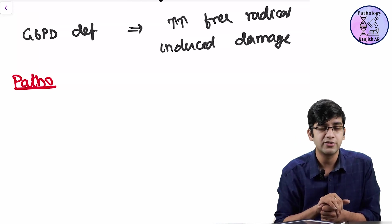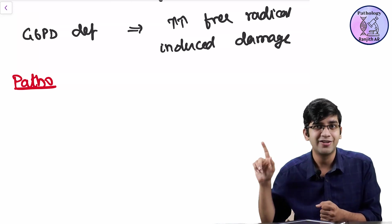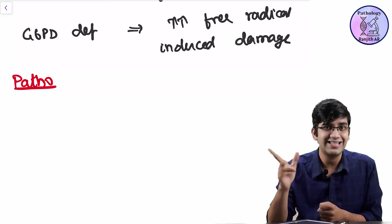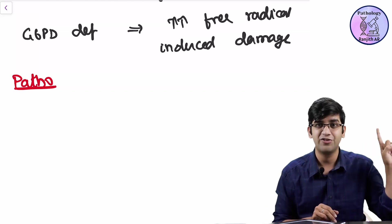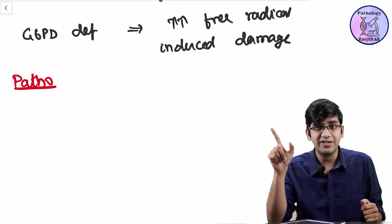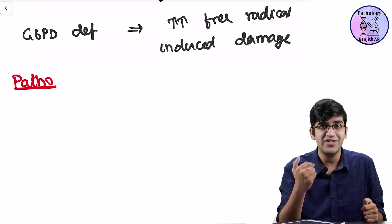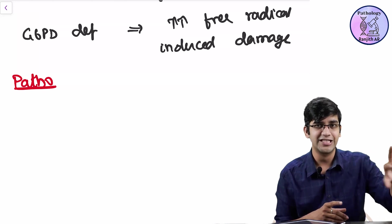What will happen to the spherocyte? It will get caught in spleen and it will get lysed there. What type of hemorrhages? Perfect. Extravascular hemorrhages. First MCQ point. G6PD has both intravascular and extravascular hemorrhages. We discussed about it. Right? First thing is that.